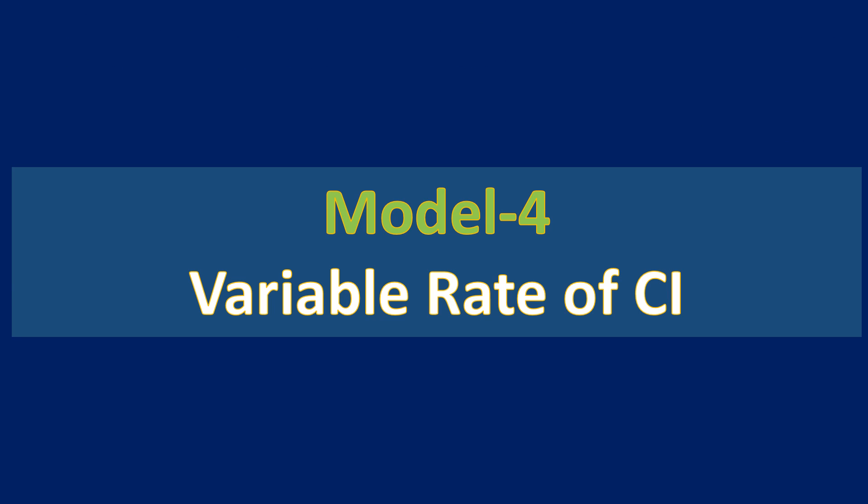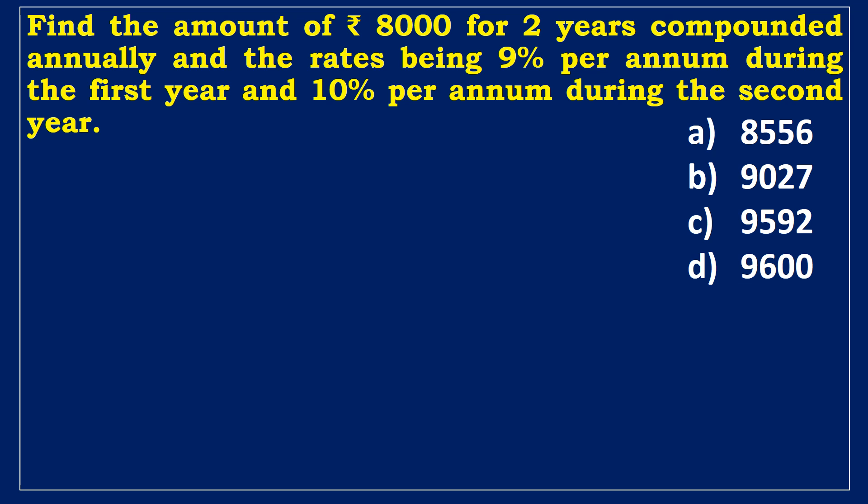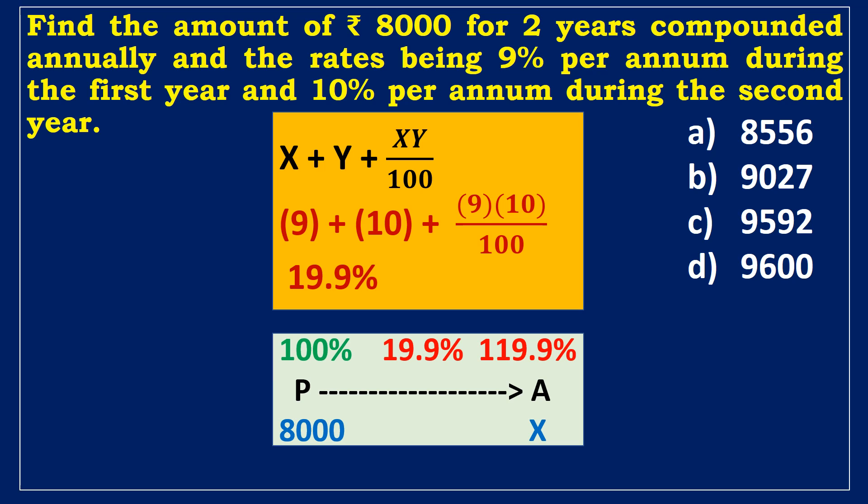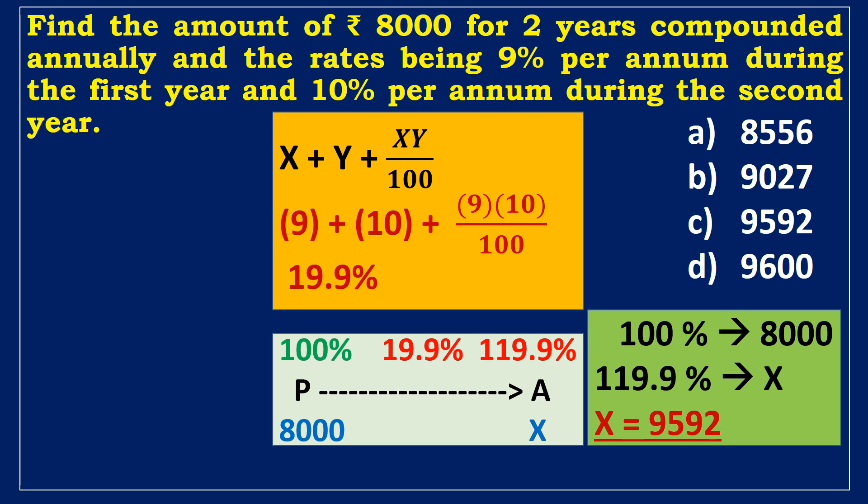Model 4: Variable rate of compound interest. Find the amount on 8000 rupees for two years compounded annually at 9% per annum during the first year and 10% per annum during the second year. Using effective percentage: 9 + 10 + (9×10)/100 = 19.9%. CI rate in two years is 19.9%. Amount = 100% + 19.9% = 119.9%. If 100% = 8000, then 119.9% = x. Cross-multiplying gives the amount = 9592 rupees.